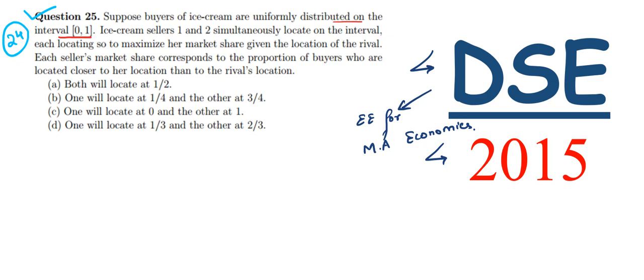So here we have an interval from 0 to 1, and ice cream buyers have been uniformly distributed over that interval. Let this be 0 and 1, with ice cream buyers uniformly distributed over the interval.